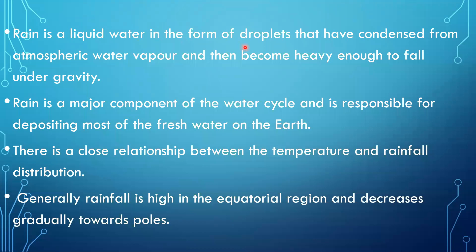Rain is liquid water in the form of droplets that have condensed from atmospheric water vapor and become heavy enough to fall under gravity. Rain is a major component of the water cycle and is responsible for depositing most of the fresh water on earth. There is a close relationship between temperature and rainfall distribution — only if there is high temperature can water evaporate; otherwise evaporation is not possible. So temperature plays a major role in bringing rainfall. Generally, rainfall is high in the equatorial region and decreases gradually towards the poles.